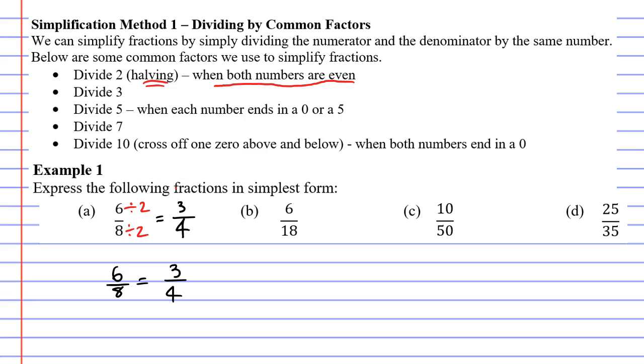Let's now move on to question B. This time we've got the fraction 6 over 18. You'll notice that they're both even again. That means we can divide by 2, or half them. Let's do that now. Half of 6 is 3. Half of 18 is 9.